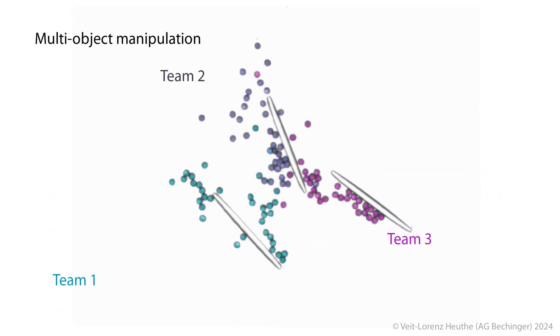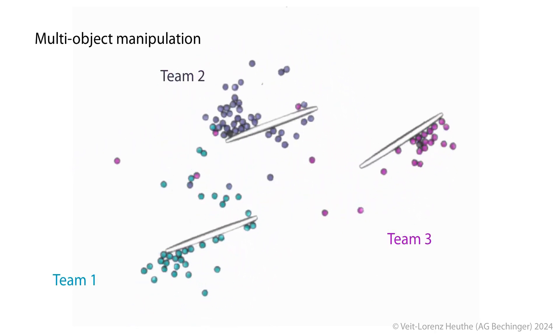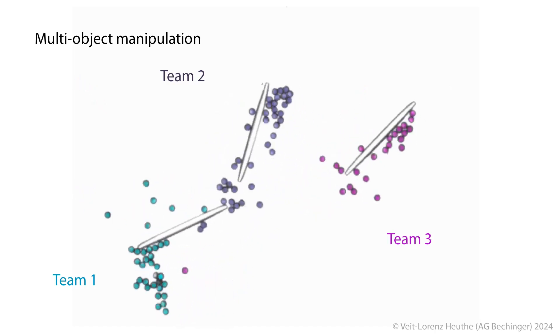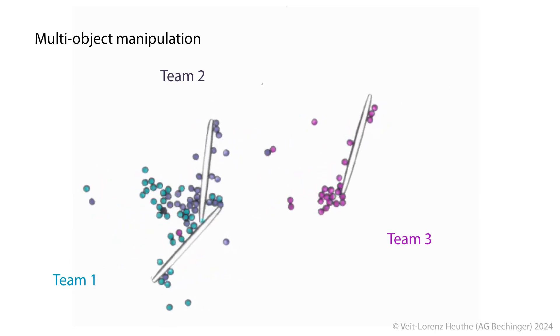With each robot making its own decisions, the swarm can even carry out multiple tasks in parallel, like rotating multiple rods at once with independent rotation directions. This demonstrates the true power of decentralized, independent control.